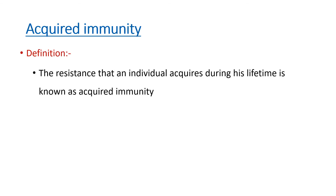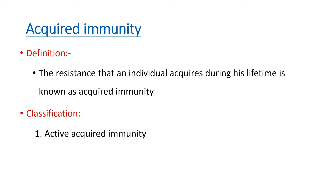Next is acquired immunity. The definition: the resistance that an individual acquires during his lifetime is known as acquired immunity. It can be classified as active or passive. This differs from innate immunity, which was an inborn capacity; here the resistance is acquired due to exposure to an antigen.